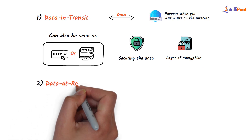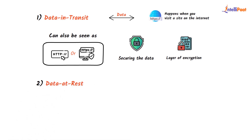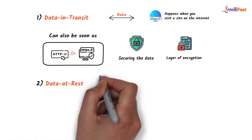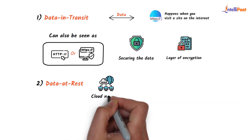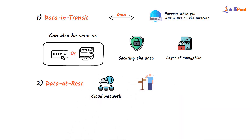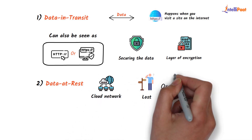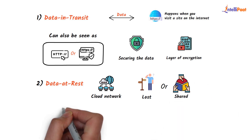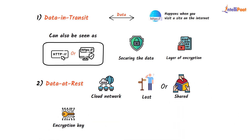The second type is data at rest. In this step, encryption of data stored on the cloud network guarantees that regardless of whether the data is lost, taken, or erroneously shared, the items are practically useless without the encryption key. Just like data in transit, decryption and encryption of data at rest is also overseen by the product application.